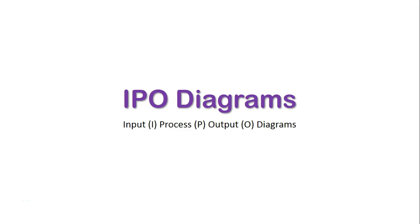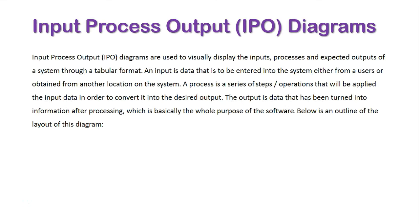We're now going to take a look at Input Process Output Diagrams, or IPO Diagrams. Input Process Output Diagrams are used to visually display the inputs, processes, and expected outputs of a system in a tabular format.